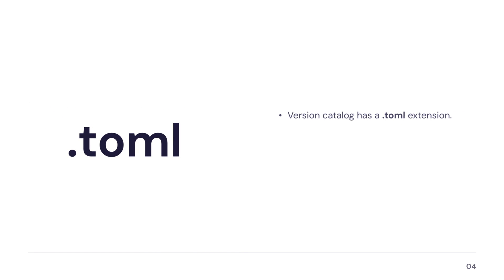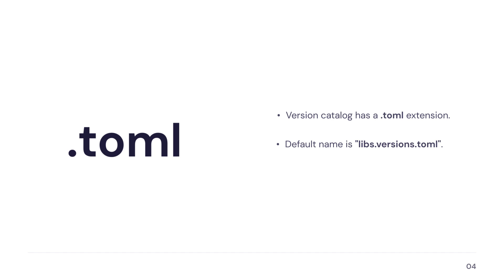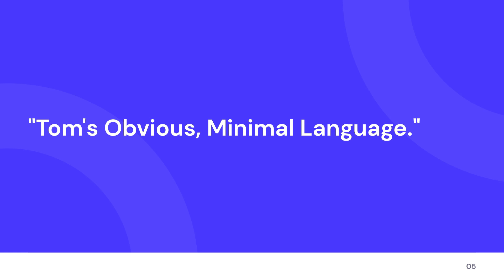Version Catalog is a simple file that has a TOML extension. Its default name is libs.versions.toml, and it's not recommended to change the name of the version catalog file itself. It should be placed inside the Gradle directory of your project so Gradle knows where to search for your dependencies. The TOML file extension stands for Tom's Obvious Minimal Language — a configuration file format easy to read due to its simple syntax, often used for configuration files, package management tools, build systems, and more.